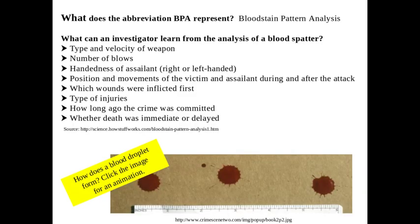Let's talk about some vocab. Blood Stain Pattern Analysis is what BPA stands for. What can we learn from blood spatter? The type and velocity of a weapon being used can be determined by how blood hits a surface. Possibly the number of blows that a blunt object made on a body, the right- or left-handedness of an assailant, position and movement of the victim and assailant during and after the attack, which wounds were inflicted first, the types of injuries, how long ago the crime was committed, and whether death was immediate or delayed.